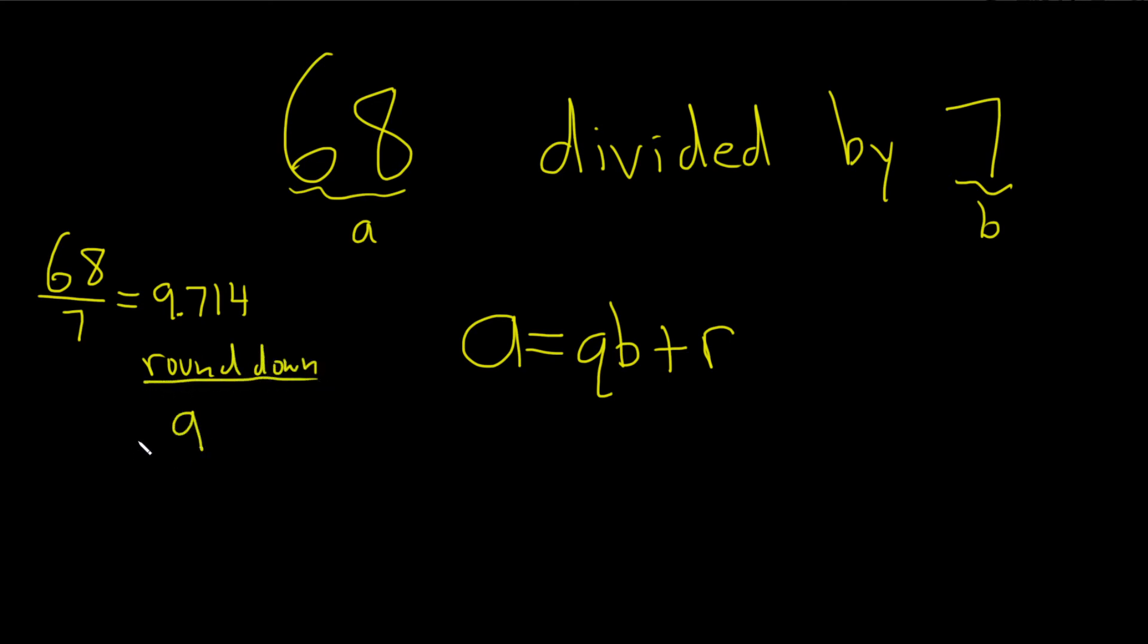So 9. That's going to be our quotient. Q equals 9. You divide, round down, and that gives you the quotient.